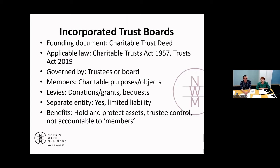There won't be individual beneficiaries as with the unincorporated trust. You'll have these charitable purposes or objects which will be set out in your trust deed, and again you won't be levying anyone because you don't have actual members — just people who may be interested in the trust. The funding for the incorporated trust board will be by way of donations, grants, or bequests. You've got the advantage of limited liability, so those individuals won't be personally liable so long as they comply with their duties, either set out in the trust deed or in the Trusts Act.